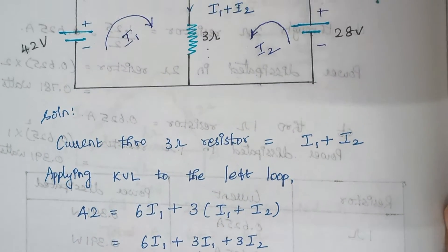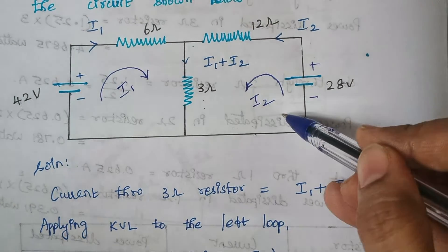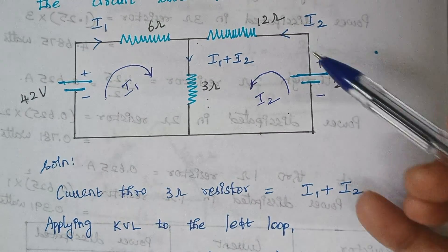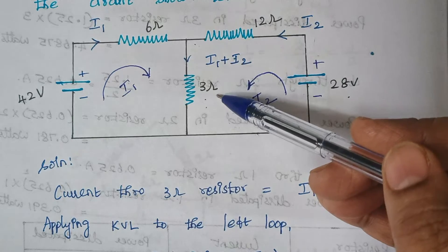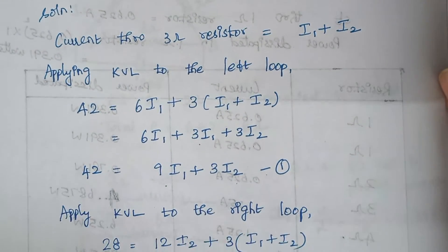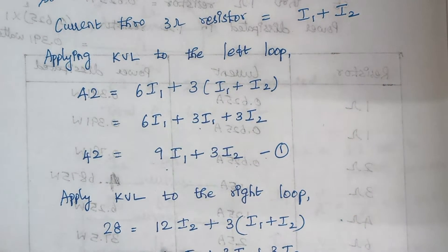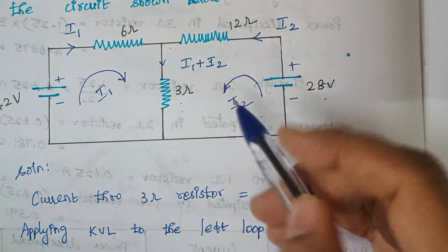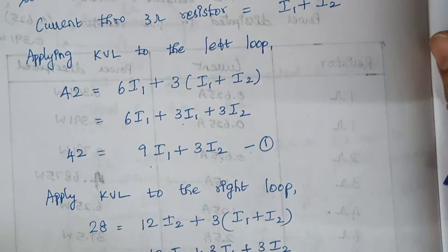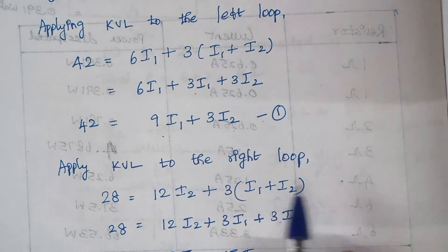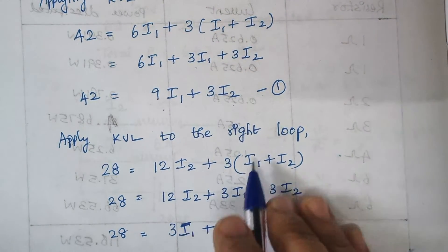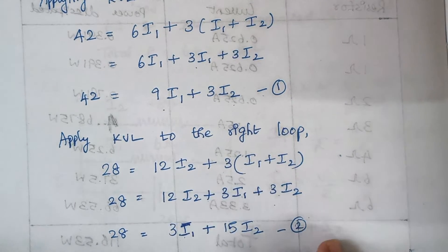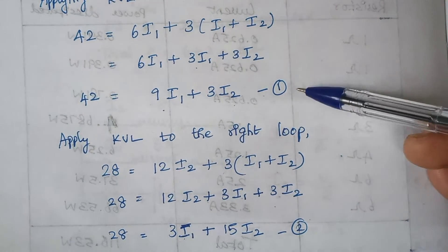Next, we apply Kirchhoff's voltage law to loop number 2. The voltage rise is 28 volts. The voltage drop is produced by the 12 ohm resistor and the 3 ohm resistor. The current through the 12 ohm resistor is I2, so the expression is: 28 = 12I2 + 3(I1 + I2). Expanding and simplifying: 28 = 3I1 + 15I2. This is Equation 2.